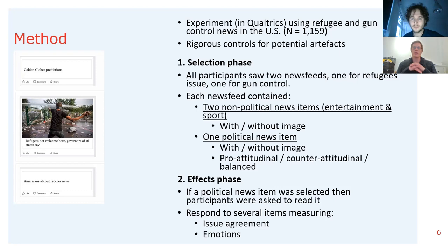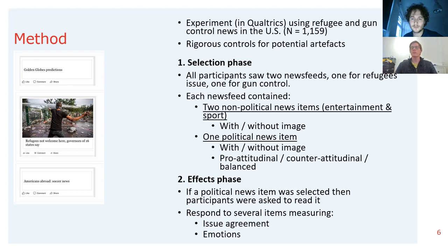In order to fully achieve these conditions, we asked people at the start of the experiment what their views were on these two issues — refugees and gun control — and by doing so we were able to split people into the three conditions: pro, counter, and balanced. Upon seeing these news feeds, participants were asked to select just one item they would most like to read in their daily news consumption, and they did that for both news feeds. In the effects phase, participants were shown the political items they had selected — though it could be that some participants didn't select any political news items at all, and those people went straight to the end of the experiment.